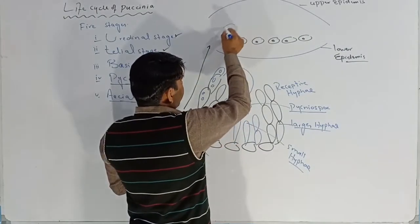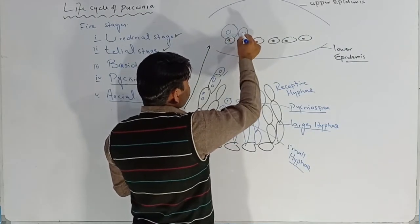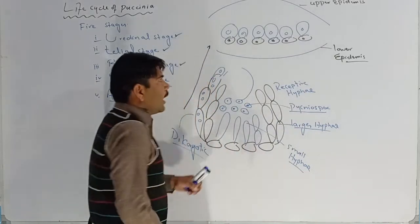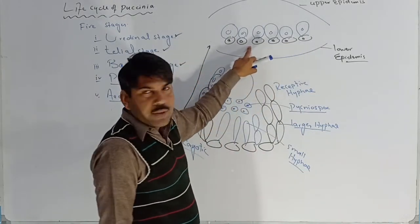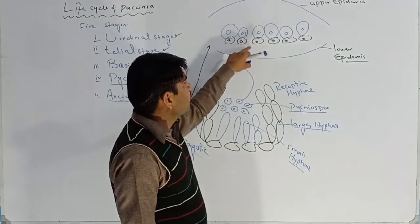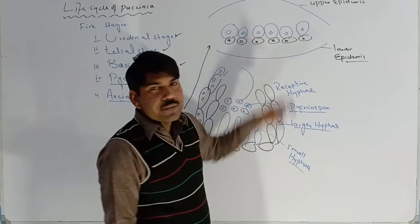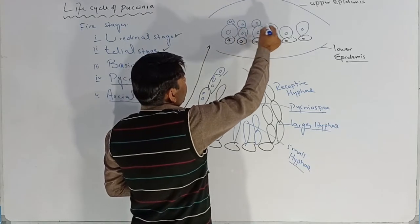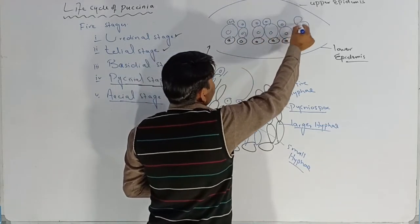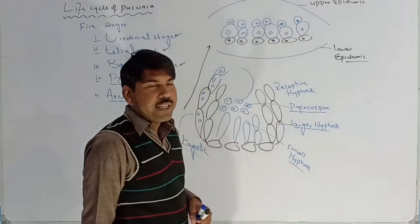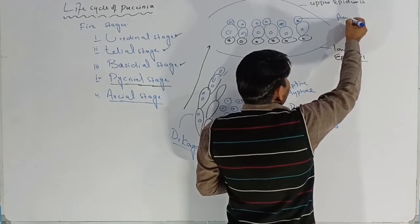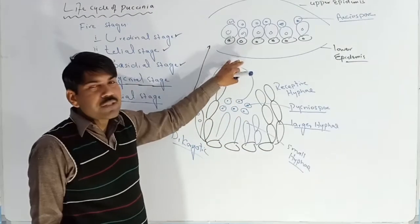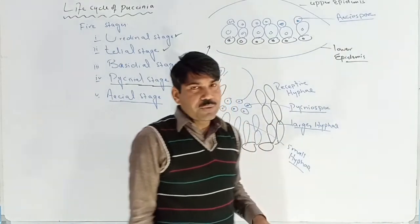One chain of cells is produced at the upper side and these upper cells are larger in size. This chain of cells produces two layers. The upper layer of cells is involved in the formation of spores. The spores produced by these larger cells are known as aeciospores, because we are discussing the aecial stage.